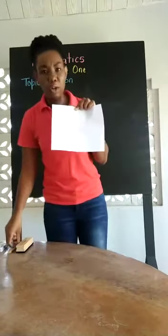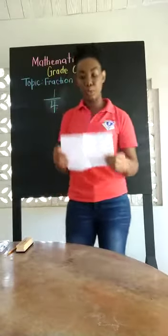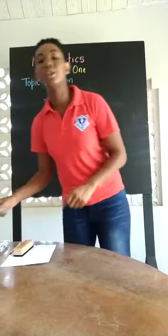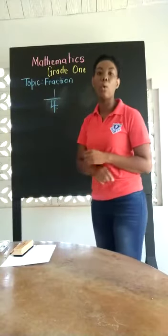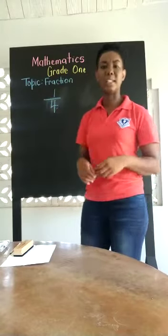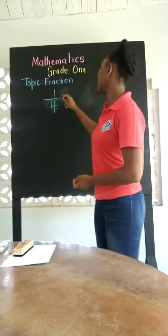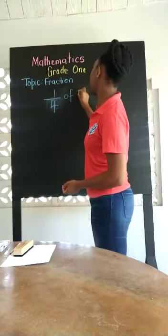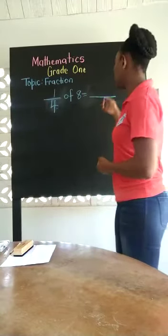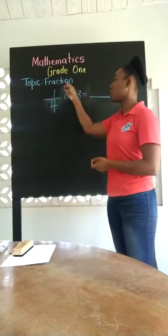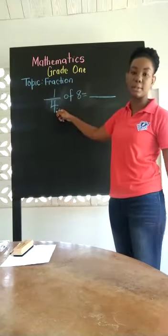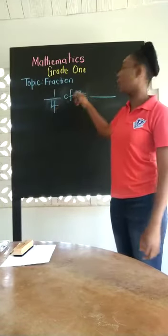I want you to put away your papers. Today we are going to be learning how to share a quarter. If I have a quarter and it says I want to find what is a quarter of eight — a quarter of eight is equal to dash — what is a way that we would go about doing this? We have items that we must share amongst four persons, and we are going to share equally among the four persons.